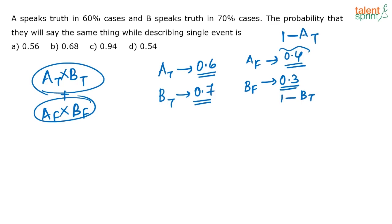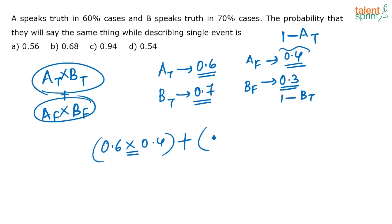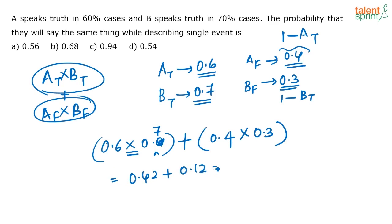Now both of them have to say the same thing. If A is telling the truth, B also has to tell the truth. So probability that A tells truth is 0.6 and probability that B also tells truth is 0.7 — and means multiplication. So this is one case. Or A tells false and B also tells false, which is 0.4 into 0.3. So the required probability is 0.6 into 0.7 plus 0.4 into 0.3, which is 0.42 plus 0.12, that is 0.54.